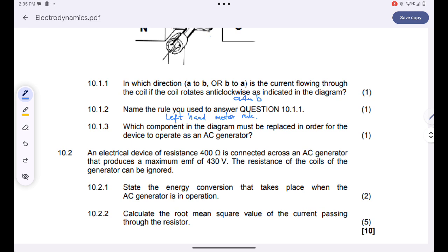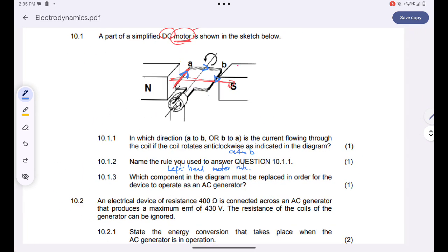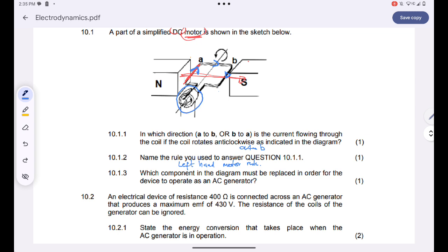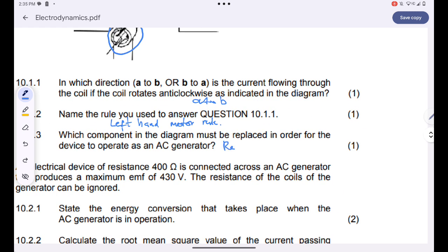Which component in the diagram must be replaced in order for the device to operate as an AC generator? We must simply replace the commutator. Just replace split rings with slip rings. Remember that slip rings only work for alternating current and split rings only work for direct current. So for us to have alternating current, we must have slip ring commutators.